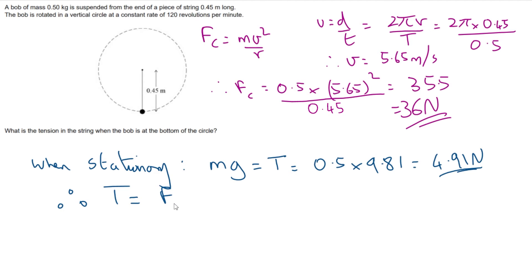And this is equal to 35.5 plus 4.91 which comes out as 40.4.